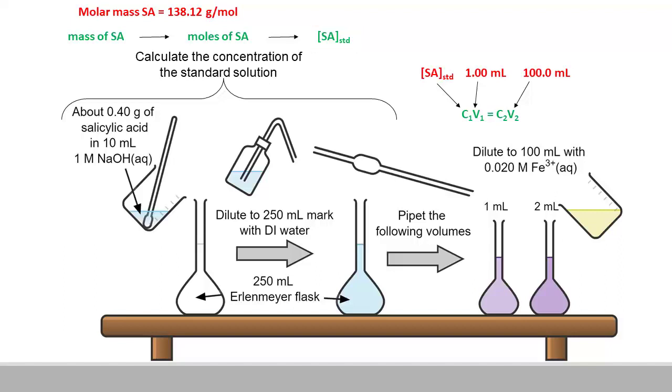The concentration of the more diluted standard solutions can be calculated using the C1V1 equals C2V2 equation. For instance, in preparing the first diluted standard solution, C1 equals the initial standard salicylic acid solution concentration, V1 equals the final volume of 100.0 milliliters.